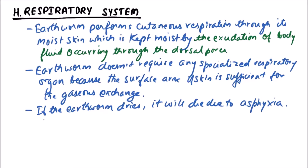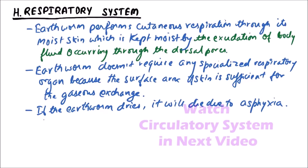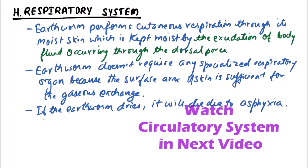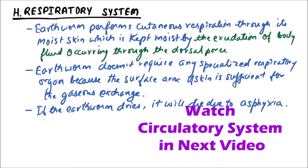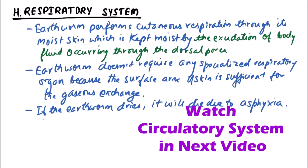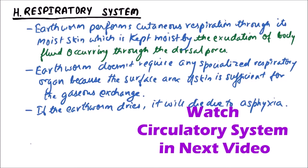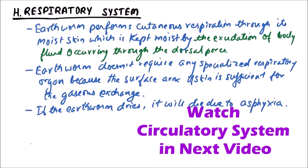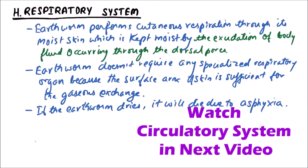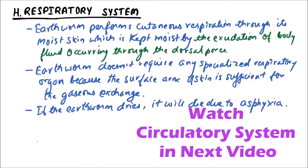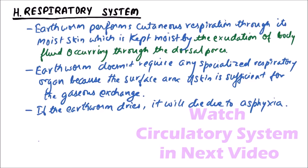One dorsal pore is present on the intersegmental groove starting from the 12th and 13th segment up to the last but one groove, to secrete mucus to keep the body wall moist. This has already been discussed about the dorsal pore in the previous lectures.